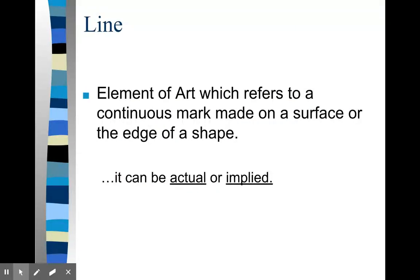We'll start with line. If you take a stick and move it through sand, a pencil on paper, you will be creating an actual line. Line refers to a continuous mark made on a surface where the edge of a shape could actually be considered a line. For example, an implied line where two values meet.